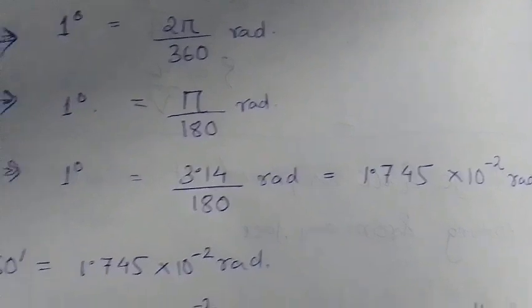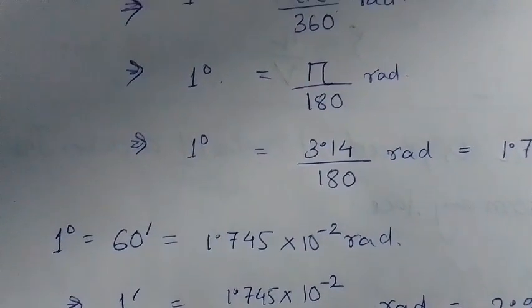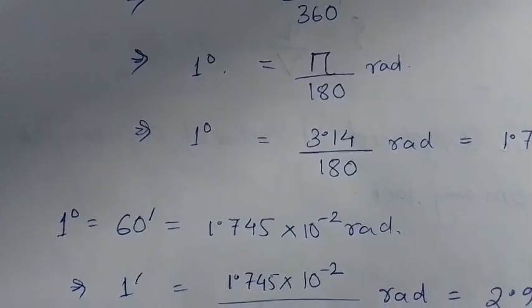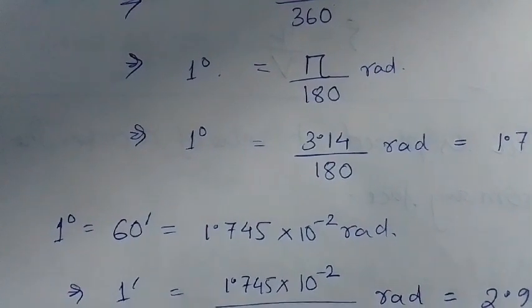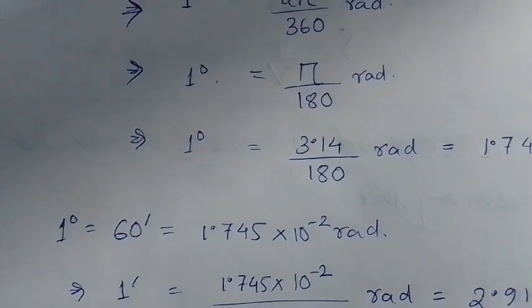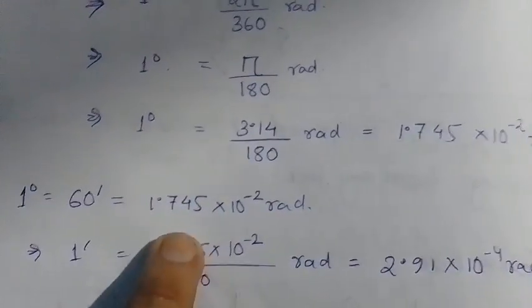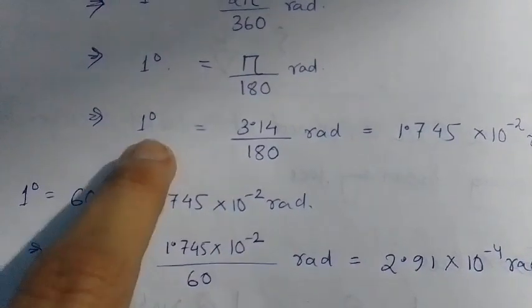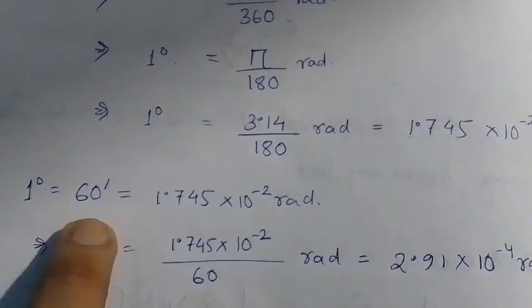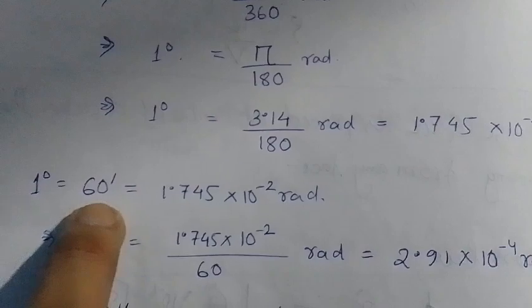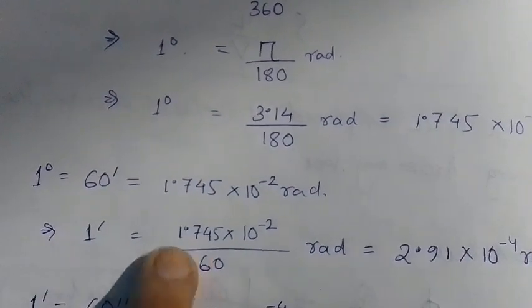Next we have 1 degree is equal to 60 minutes. This is the value that we have already obtained from here, so 1 minute will be equal to this divided by 60.